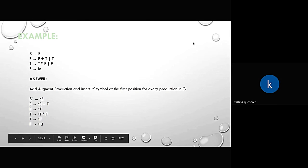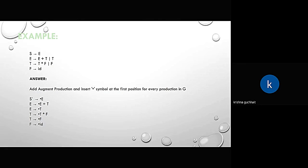For the example grammar: S → E, E → E + T | T, T → T * F | F, F → id. We add the augmented production and insert a dot symbol at the first position for every production: S' → •E, E → •E + T, E → •T, T → •T * F, T → •F, F → •id.